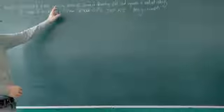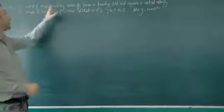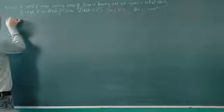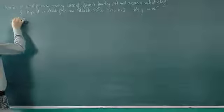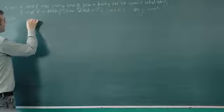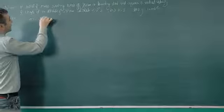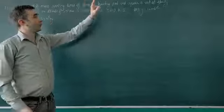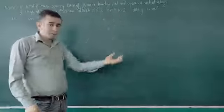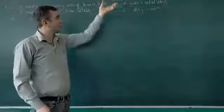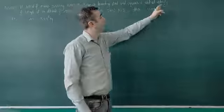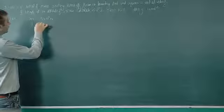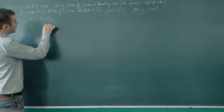A rocket of mass 3 times 10 to the power 6 kg has to acquire a vertical velocity of 1 km per second.